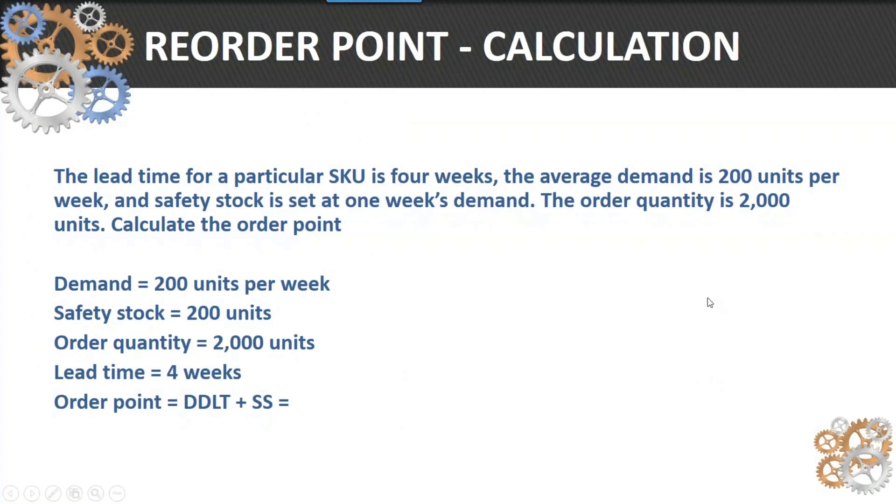Here's a simple real calculation: 200 units per week, 200 units of safety stock, order quantity of 2000, and a four-week lead time. You can very easily create a spreadsheet that has all these parameters and automatically calculate the reorder point for each independent demand item.